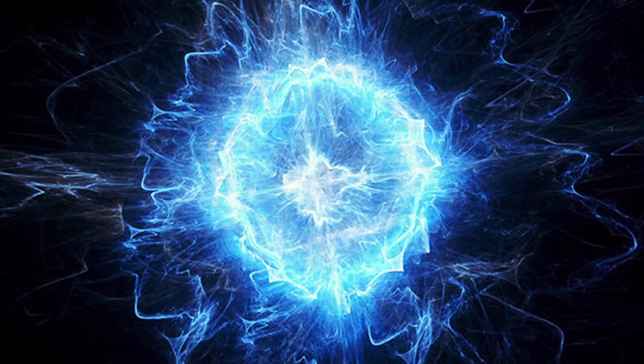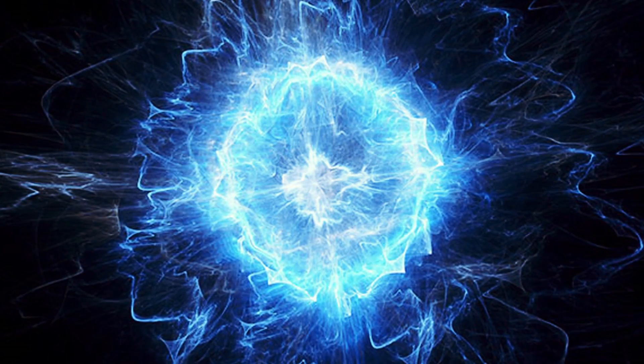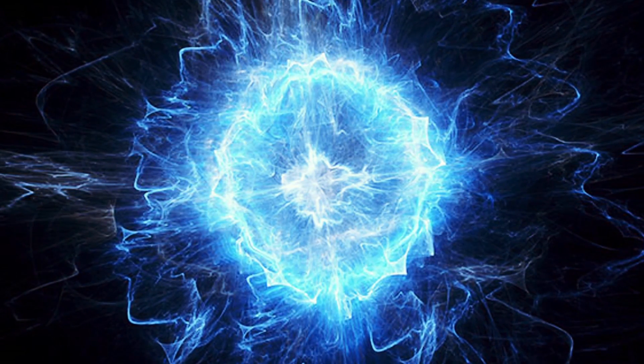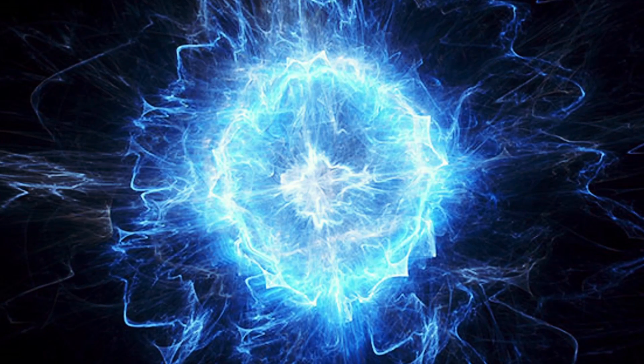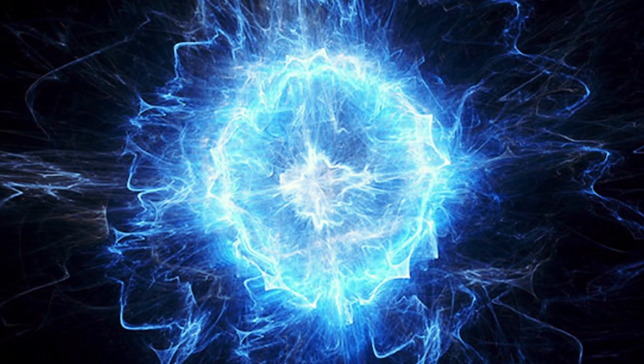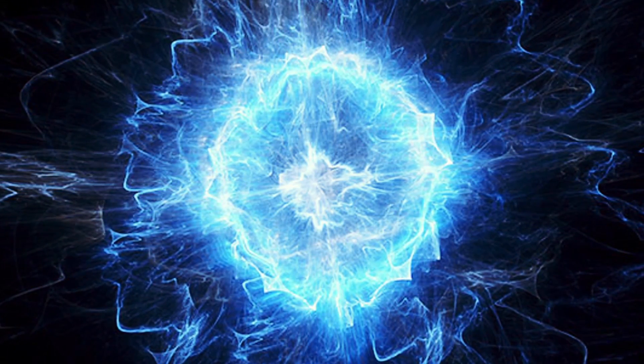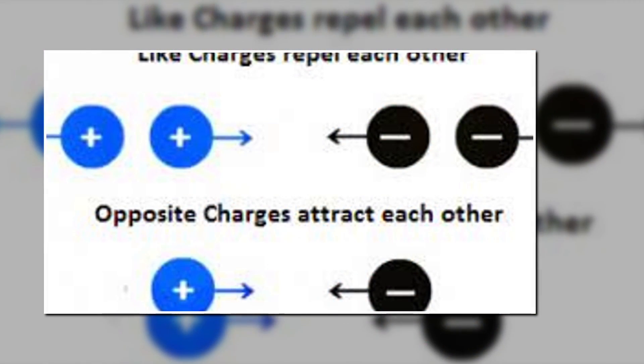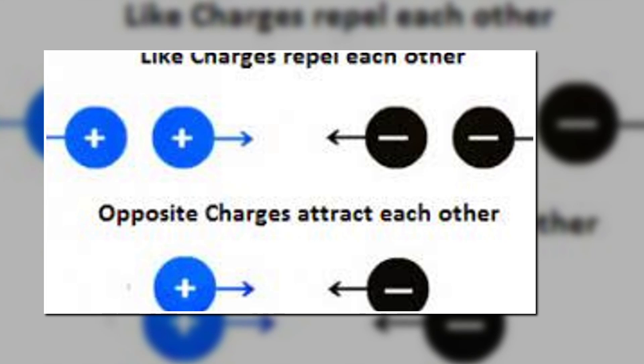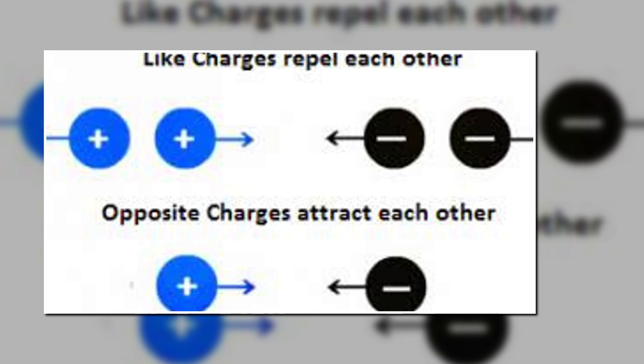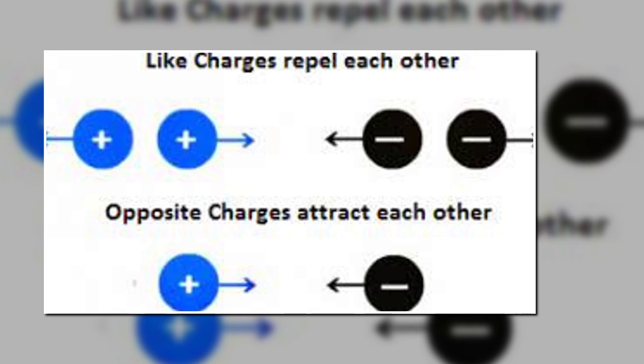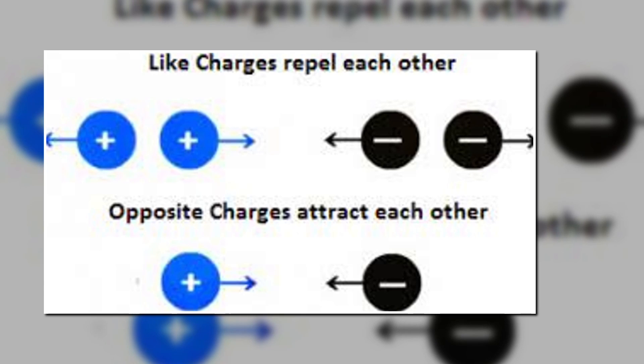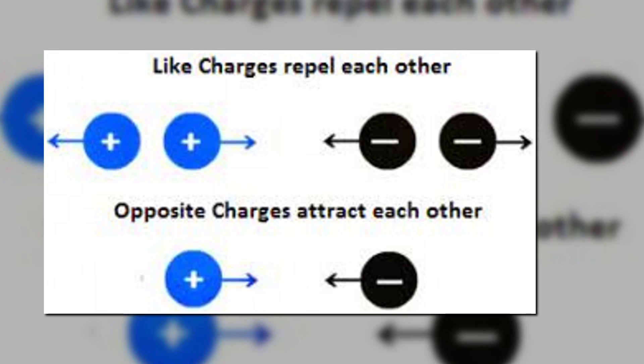Electric charge is a fundamental property of matter, which is responsible for the electrical force that exists between charged particles. There are two types of electric charge, positive and negative. Like charges repel each other, while opposite charges attract each other. The SI unit of electric charge is Coulomb.